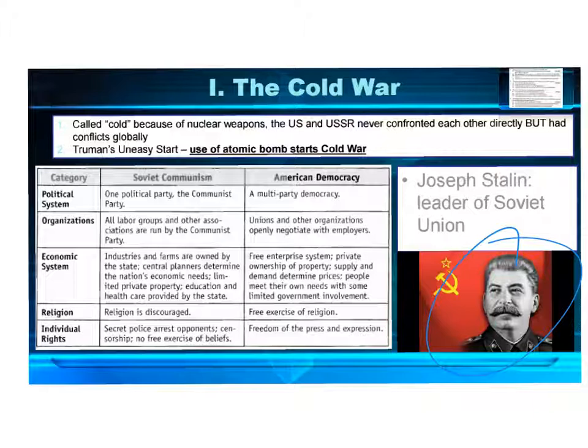The difference, obviously: communism is one political party. Like in China, they have a board that picks one person to run it — no voting. Versus America, where you can have as many parties as you want. But the economic systems are entirely different. In a full-fledged communist country like the Soviet Union, the government actually owns the farmlands.